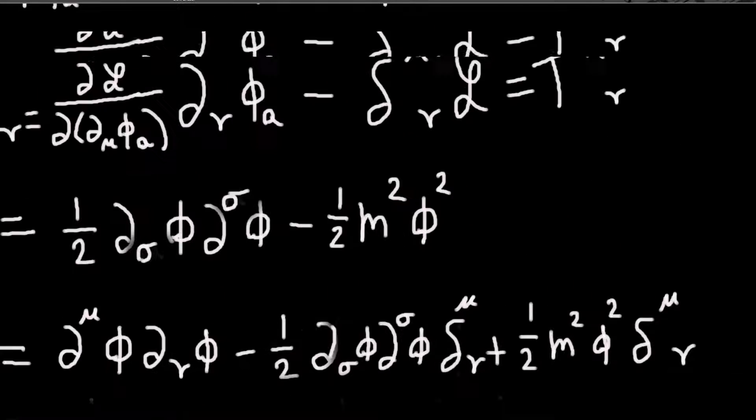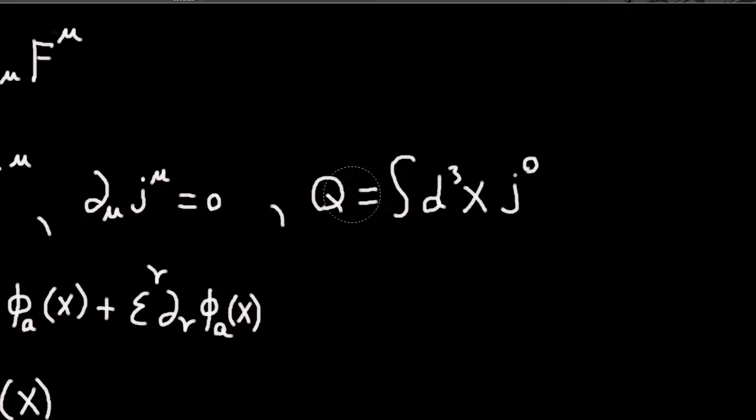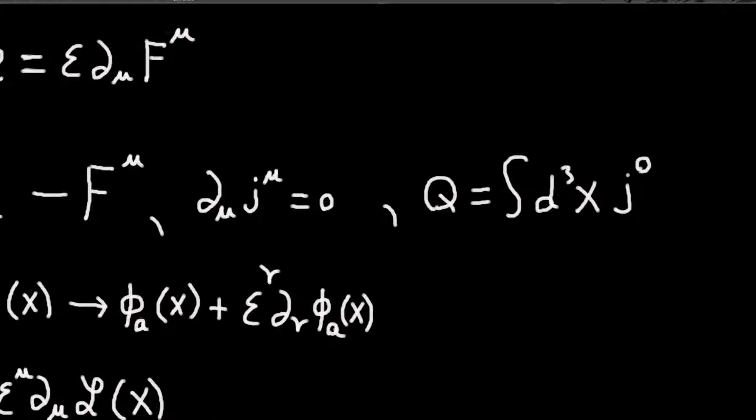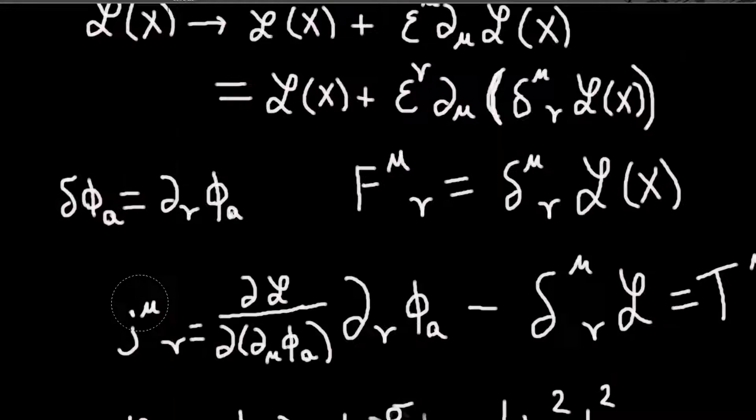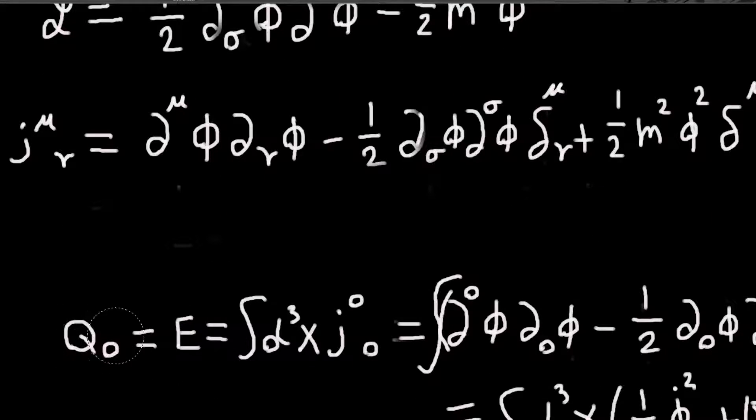Now let's calculate our... So remember, we have conserved charges. We'll have four conserved charges. Given by the integral of the time component of our currents overall space. So Q0, which will be the energy density of the field, will be given by integral over all space of the time component of the zeroth current.